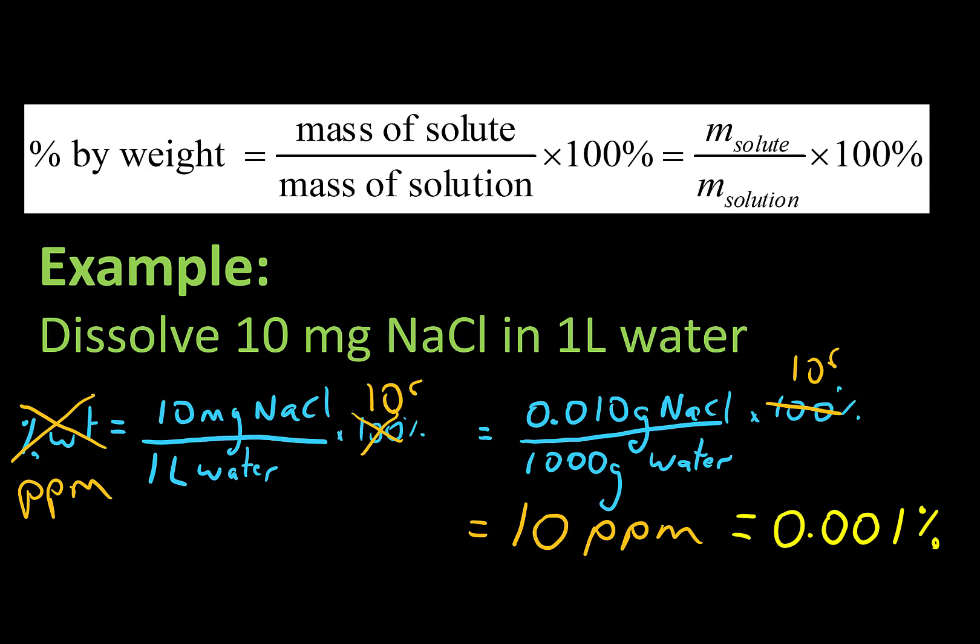Is either one of them more correct or more wrong than the other? Not at all. 0.001% is the correct answer. It's just that sometimes those numbers are really small and it's easier to say 10 parts per million than 0.001.